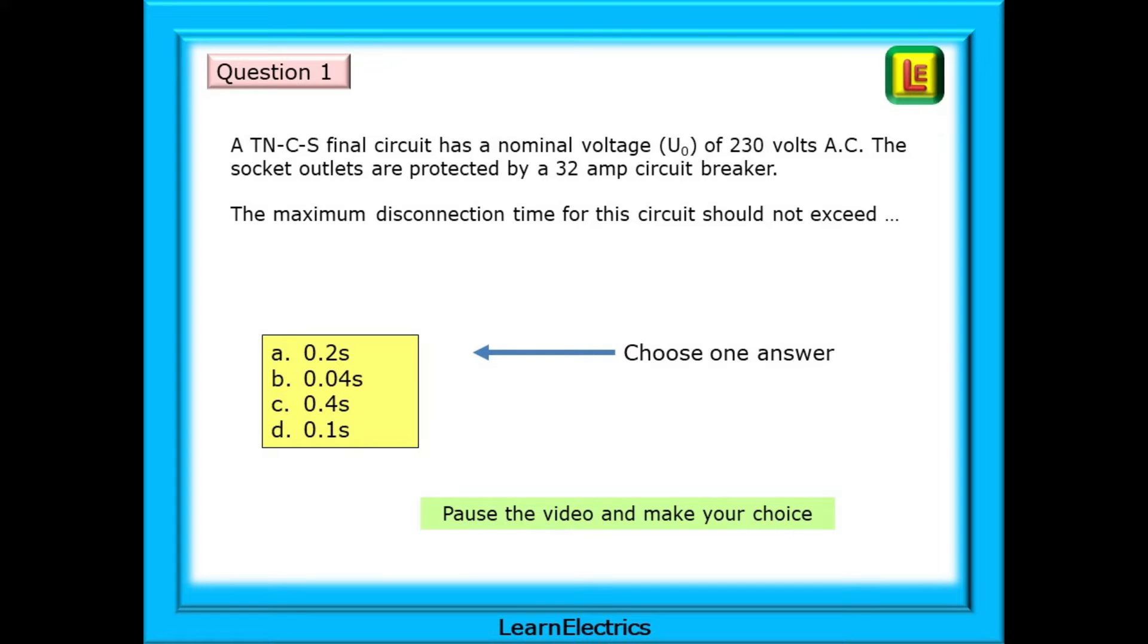The question asks, A TNCS final circuit has a nominal voltage, U0, of 230 volts AC. The socket outlets are protected by a 32 amp circuit breaker. The maximum disconnection time for this circuit should not exceed what? And there are 4 possible answers. Choose the most appropriate. Pause the video and make your choice. The answer is on the next slide.